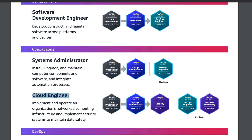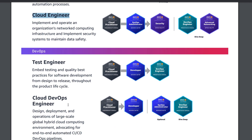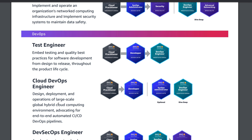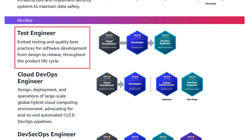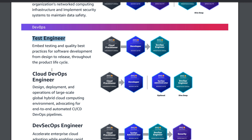Coming to the DevOps paths, we have Test Engineer, Cloud DevOps Engineer, and DevOps Engineer. Starting with Test Engineer — the roles and responsibilities involve embedding testing and quality best practices for software development from design to release throughout the product lifecycle. If you want to become a Test Engineer, you need Cloud Practitioner, Developer Associate, and DevOps Engineer Professional.